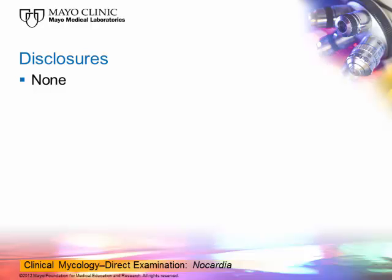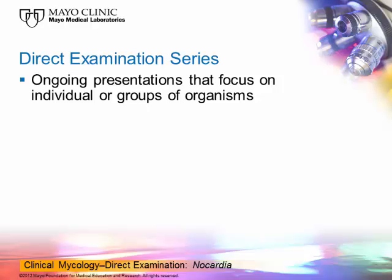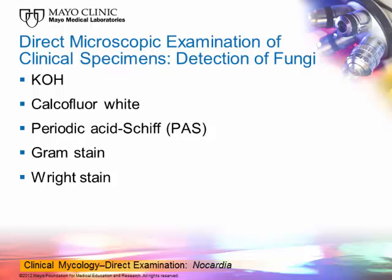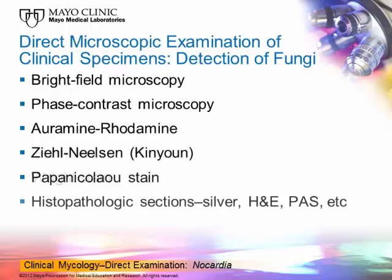I have nothing to disclose. This is an ongoing presentation that focuses on individual or groups of organisms as seen in the direct examination of clinical specimens. The next slides show a number of stains and methods that can be used to detect fungi, even though they're not designed to do so. An astute eye can pick up organisms using things like the Gram stain, the Wright stain, and so on. There are a number of things here where you might not expect to find fungi, but if you look closely, there are times when you certainly can.